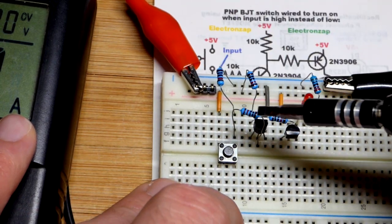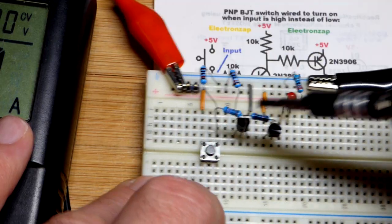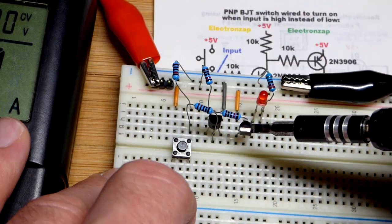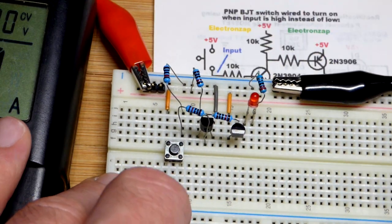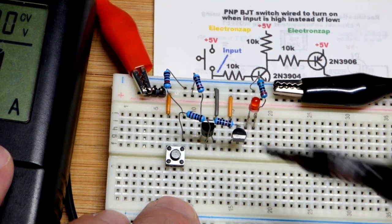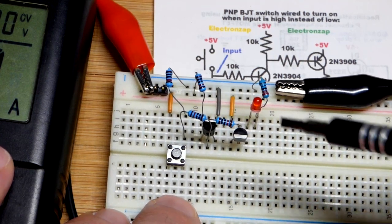When we remove that high input, we get a low input thanks to the pull-up resistor, turning off the NPN and therefore giving a high input to the PNP, turning it off as well.